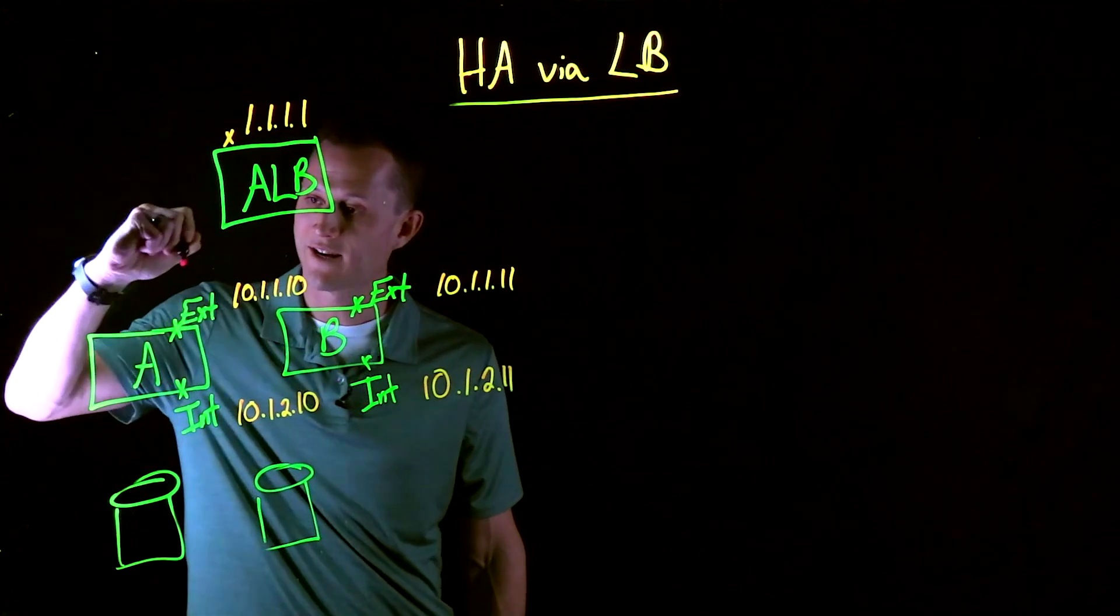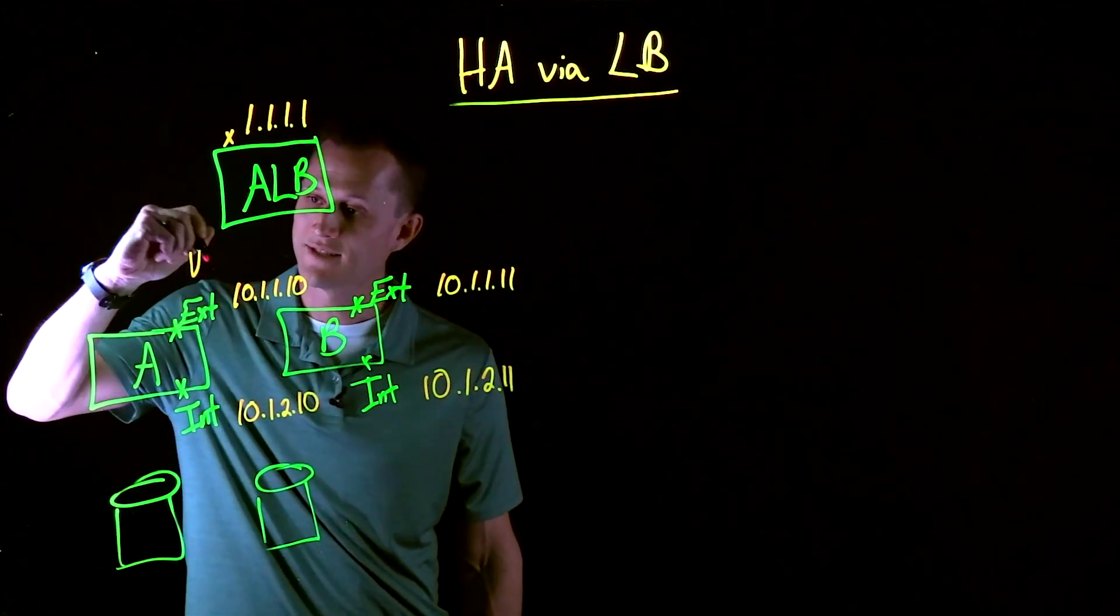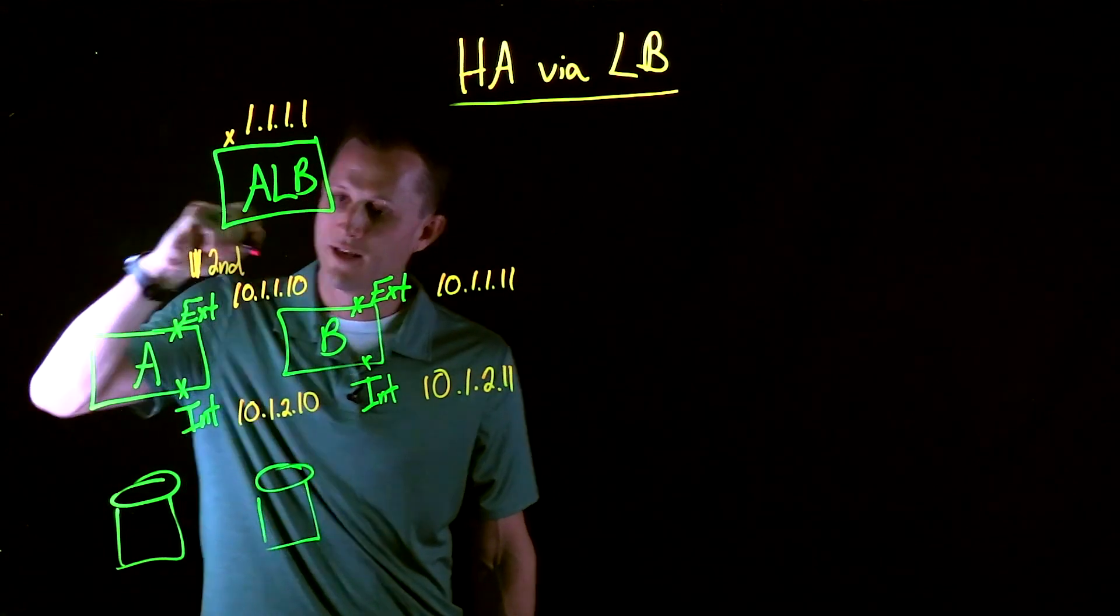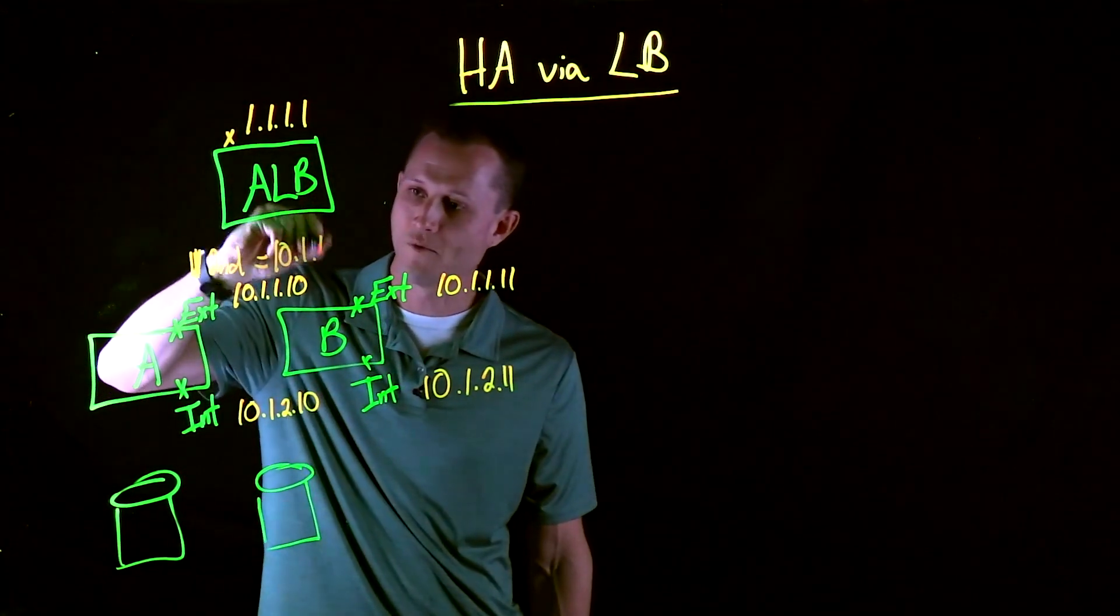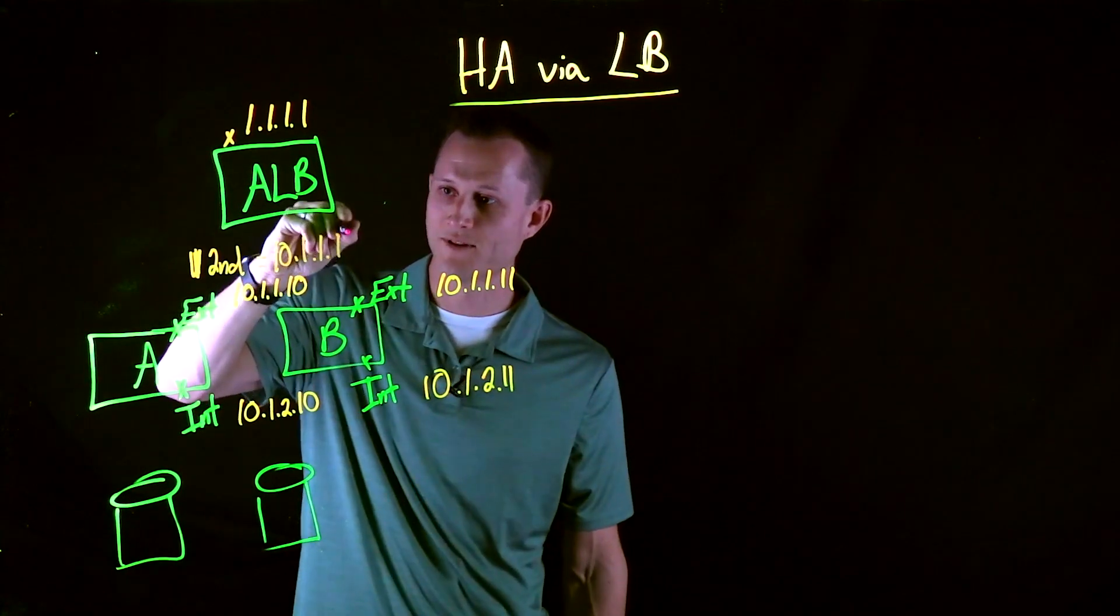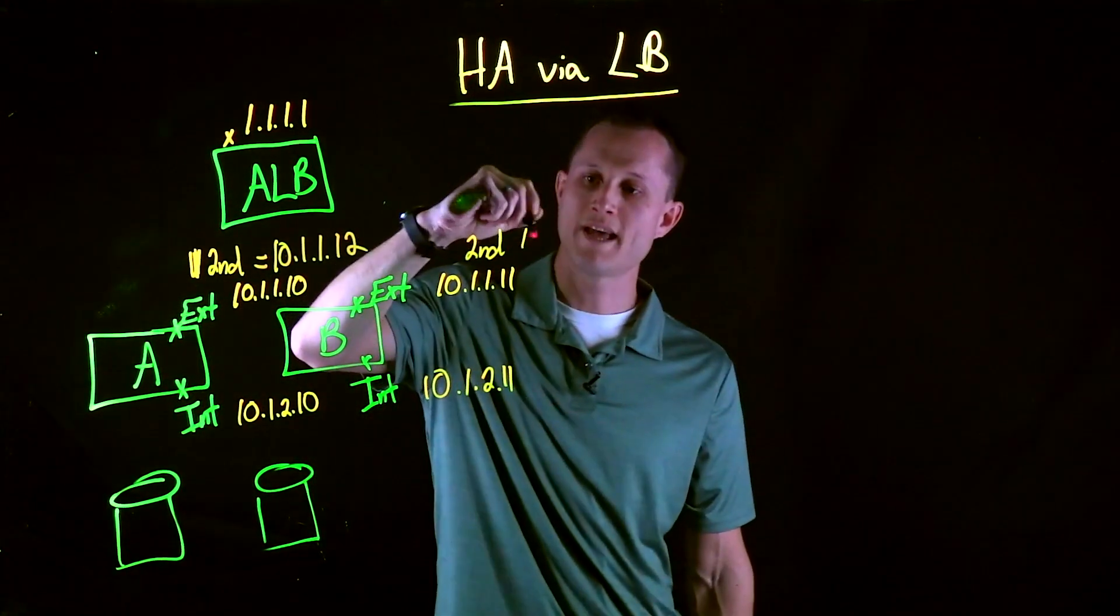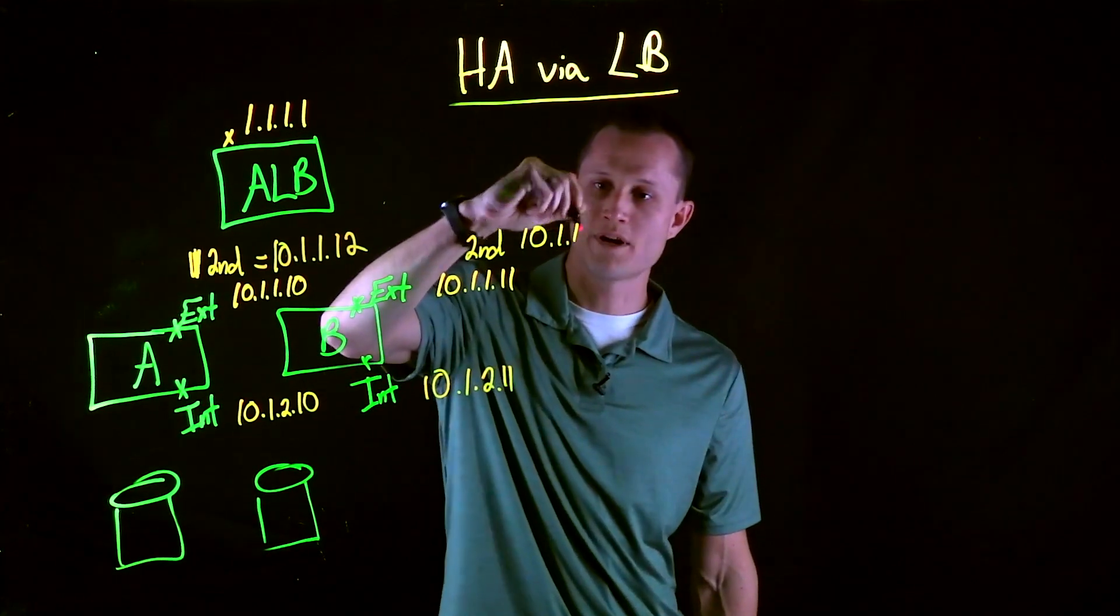So let's drop a secondary IP. We'll call this essentially the secondary. And we have 10.1.1.12. And we'll make this secondary 10.1.1.13.